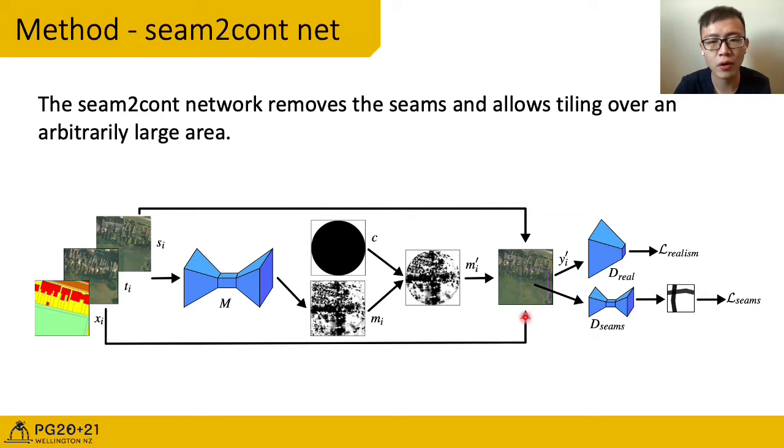There are two discriminators working in seam2cont network. The real discriminator is used to ensure the realistic blending results, make sure there's no blending traces like the circle. The seams discriminator is to remove seams. It takes random patches and generates a mask that locates the seams. We use such a generator to work as a discriminator. We know the real seam location and we have the predicted location. So we can calculate a loss to make sure that the generator m will learn to generate a mask that covers the seam area.